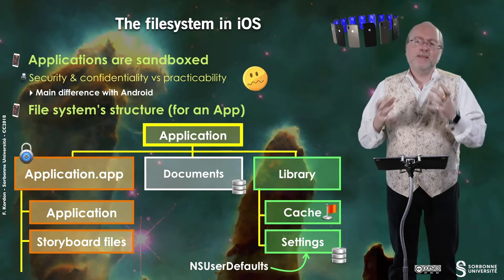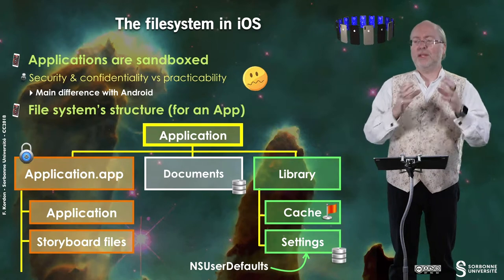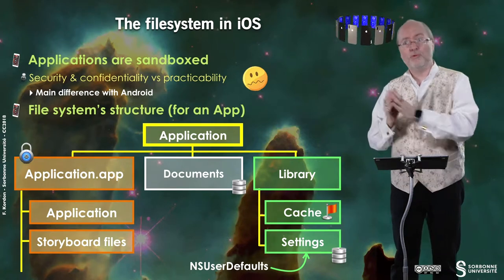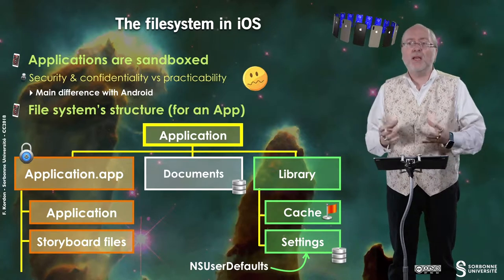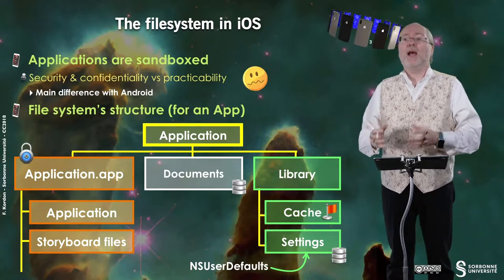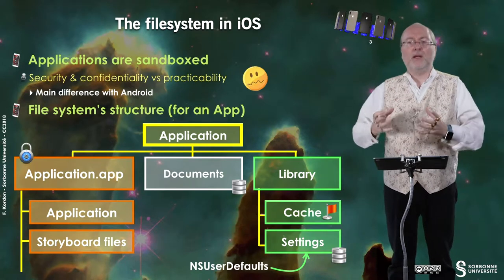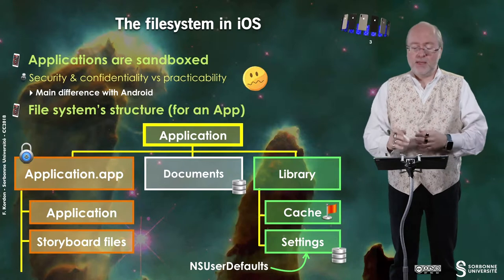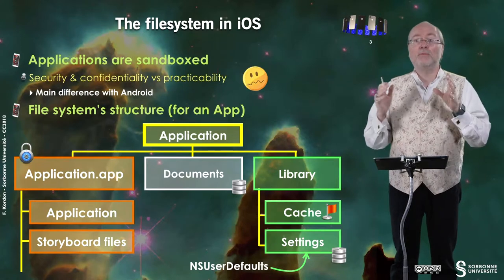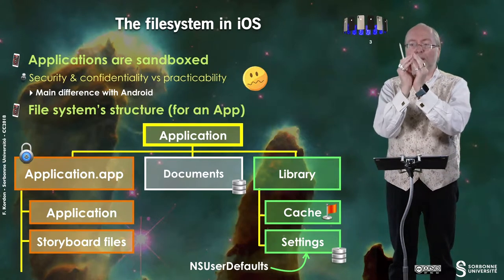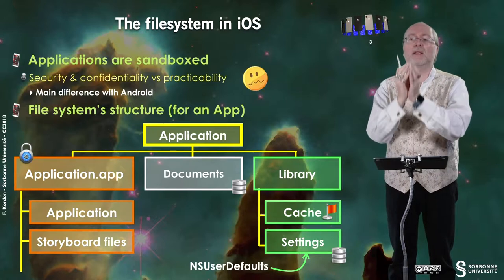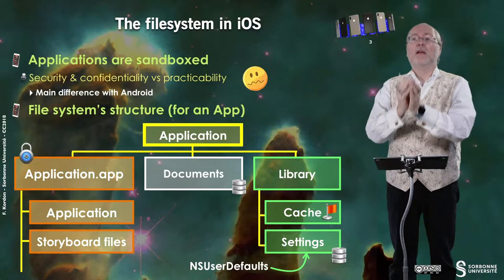When you're back in foreground, you can retrieve this context, and so you can have your user be back in your application exactly as if they were just leaving it, whatever the time between leaving and coming back. There is, of course, a file system in iOS. I told you that an iOS device — and it's also true for an Android device — is a real computer. And in iOS there are some particularities. The main one is that applications are sandboxed: there is a container where they can write data, and that's all.